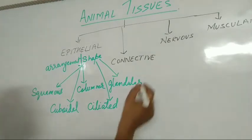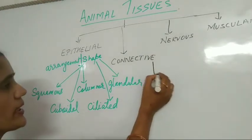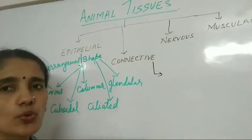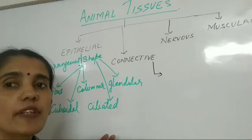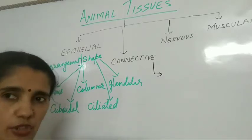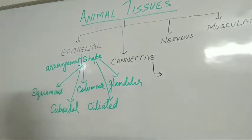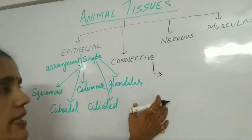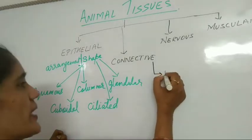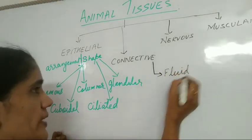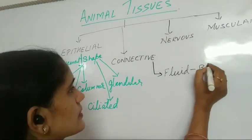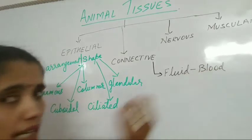Next is connective tissue. By name only it is clear that the function of connective tissue is to connect different organs — it helps in attachment or connectivity. Different types of connective tissue include fluid or liquid connective tissue, that is blood.